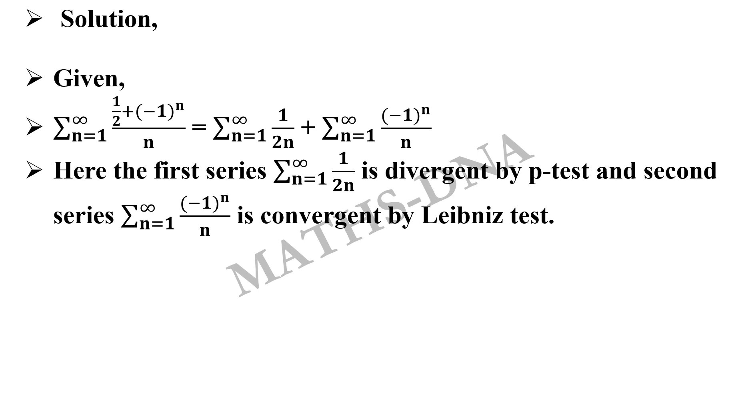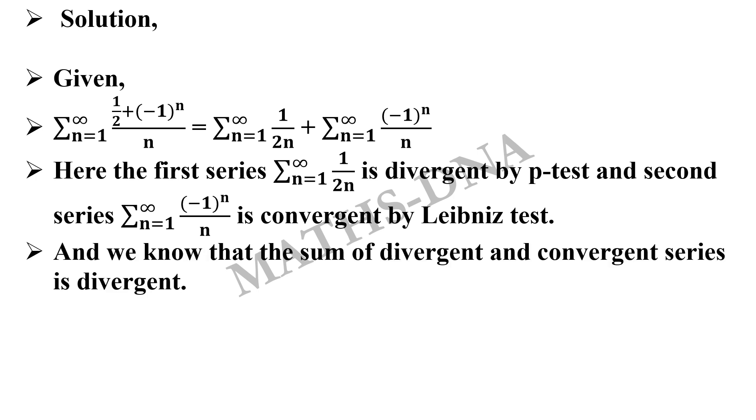You should be able to identify which test you have to apply to the given series to check whether it is convergent or divergent. We already know that the sum of a divergent and convergent series will be a divergent series. So the correct answer is option b. The given series is divergent.